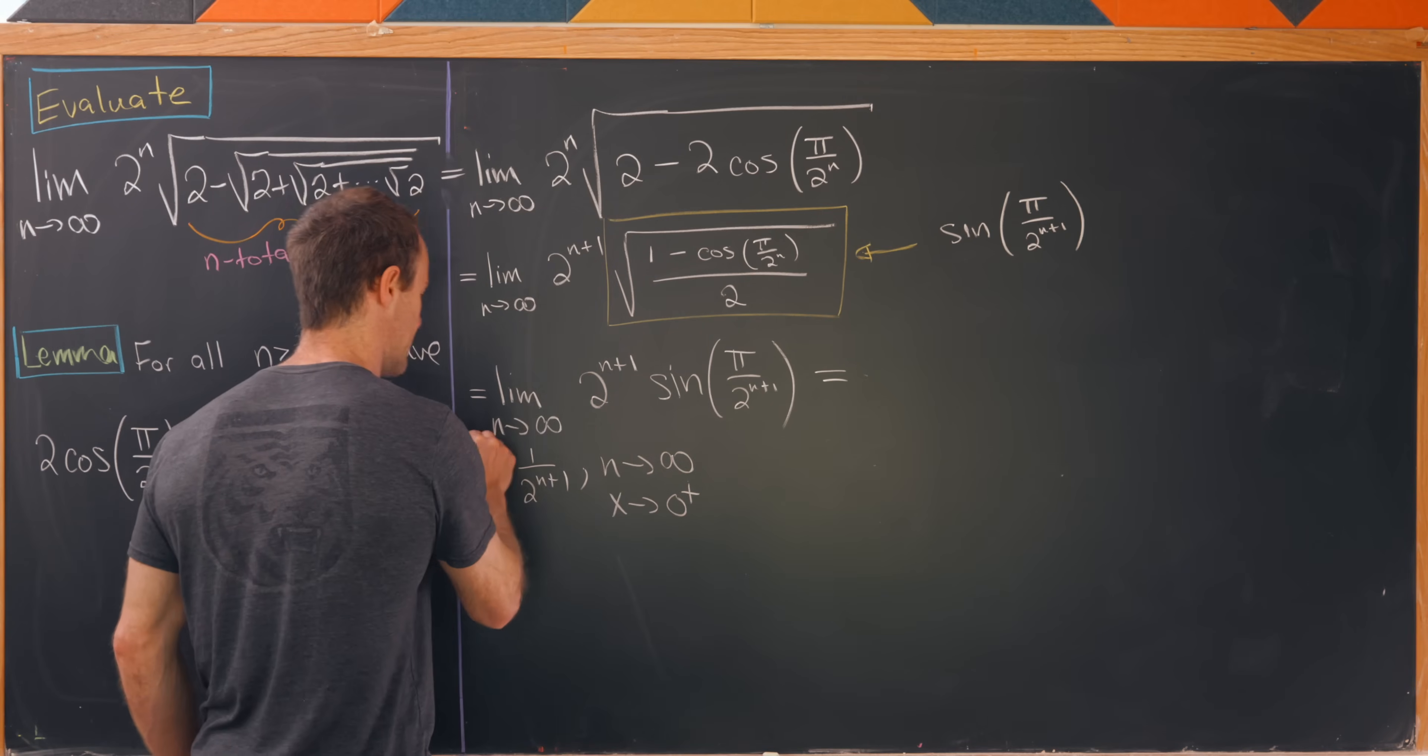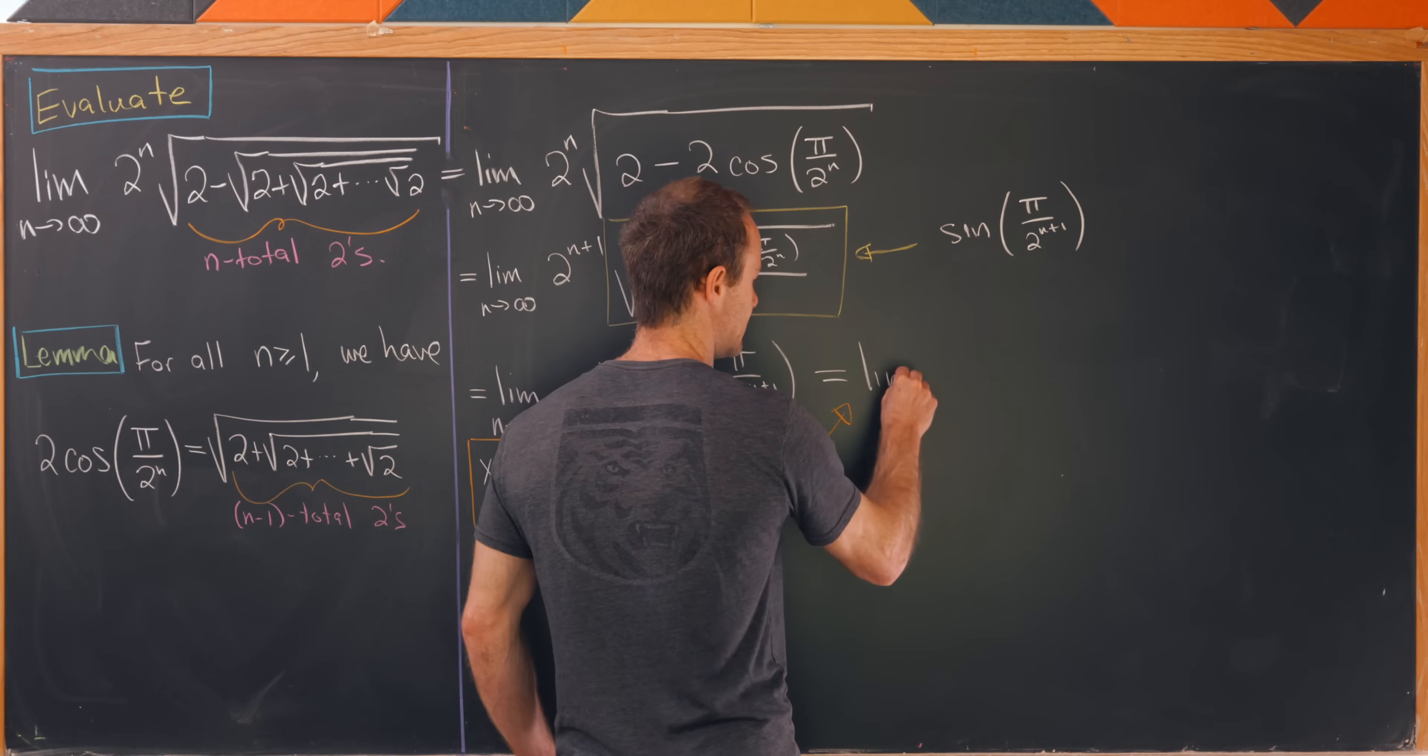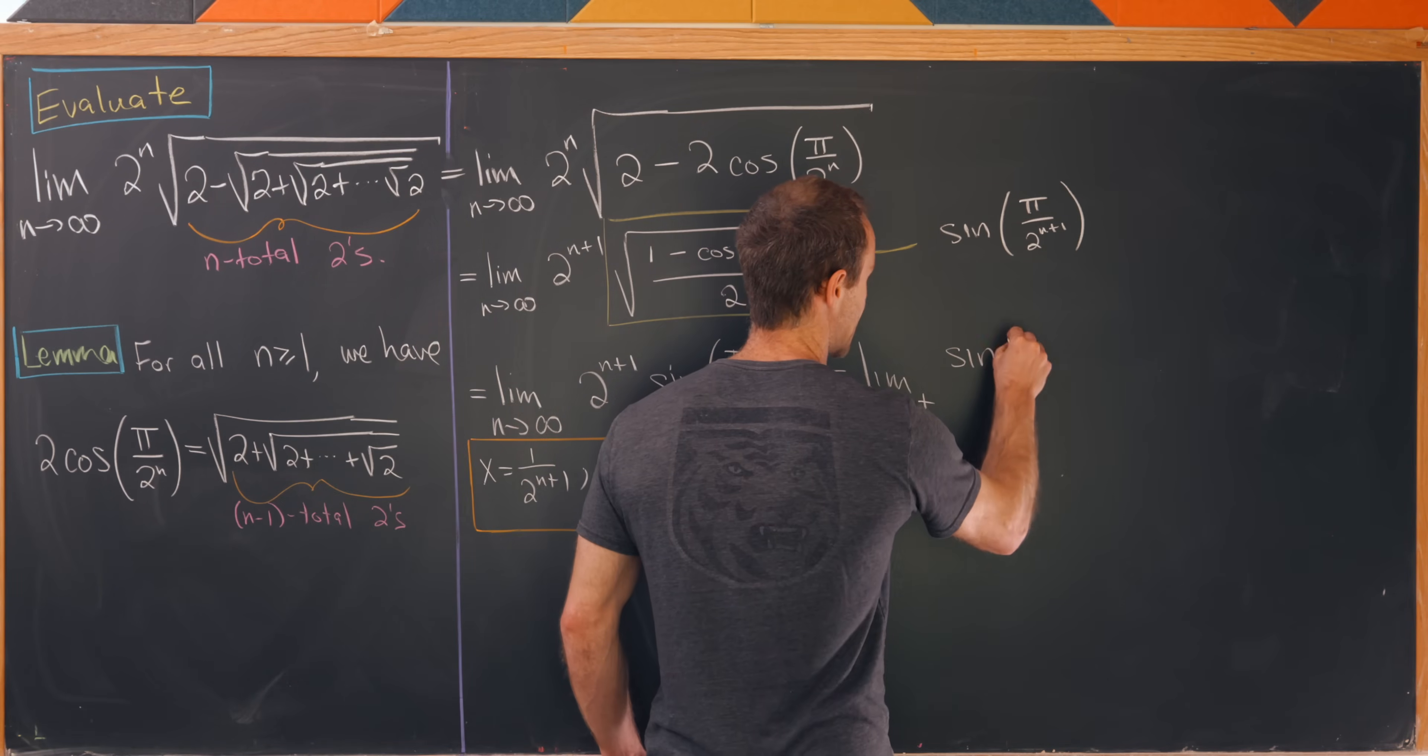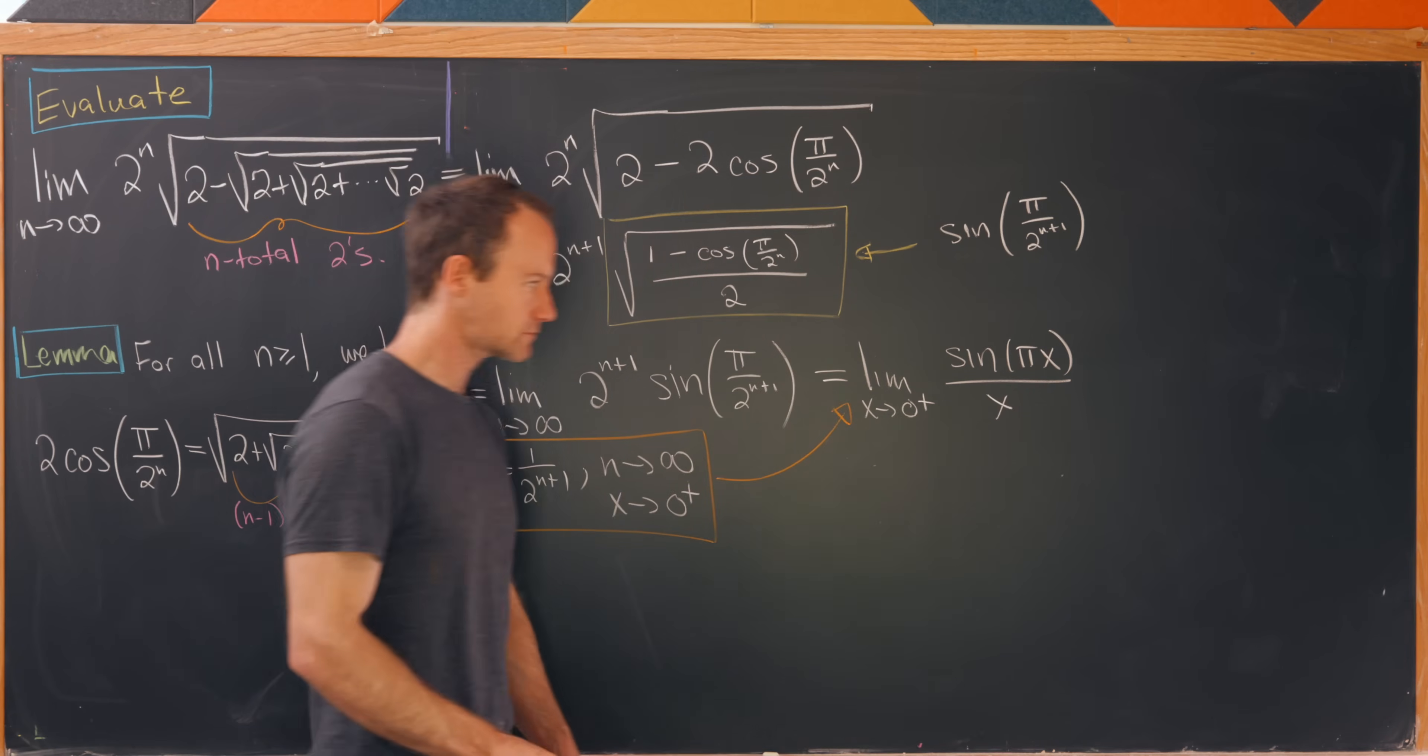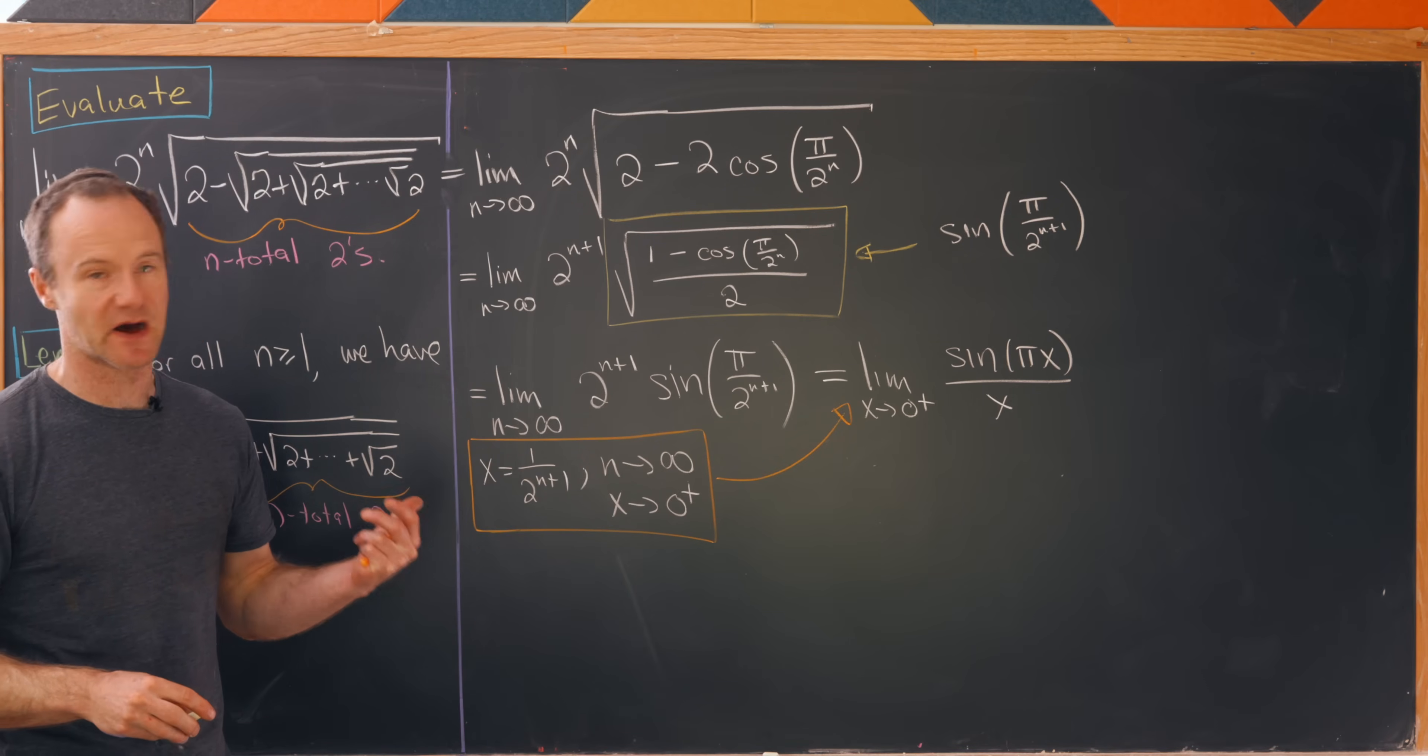What does that turn this limit into? Let's be really careful about all of the places that we have to replace our powers of 2 with x's. We get the limit as x goes to 0 from above of the sine of pi times x over x. But now that has a well-known identity. That should be equal to just pi.